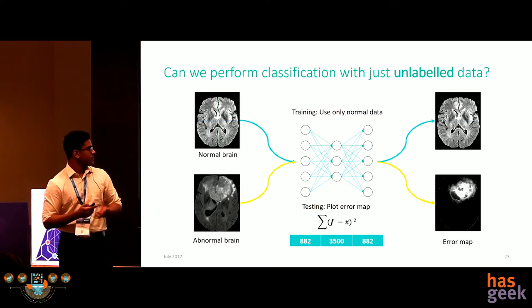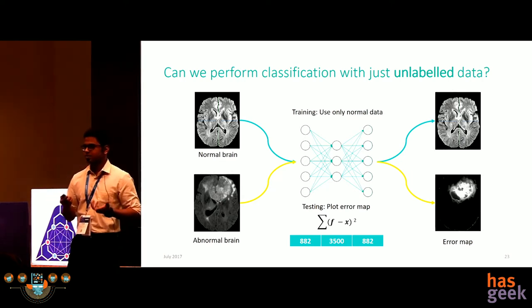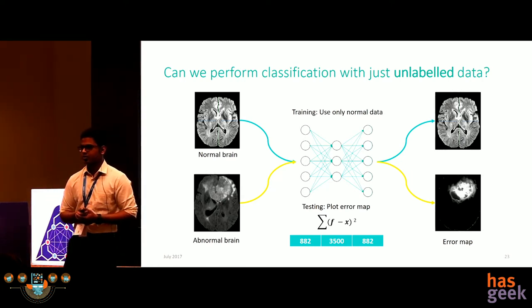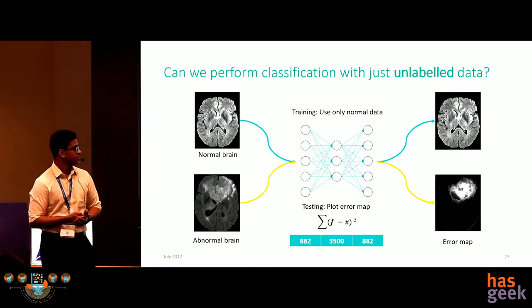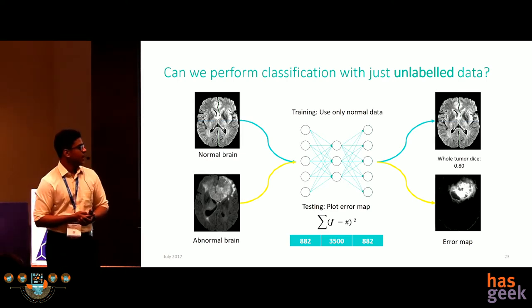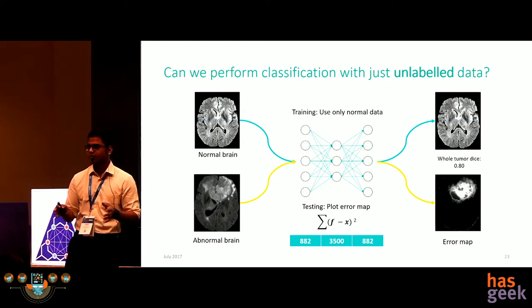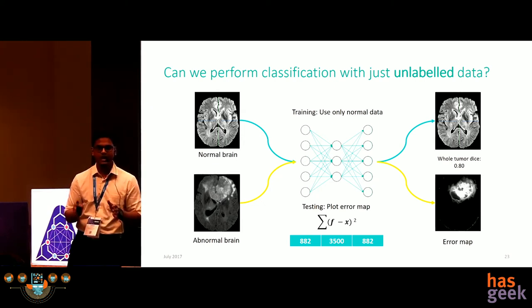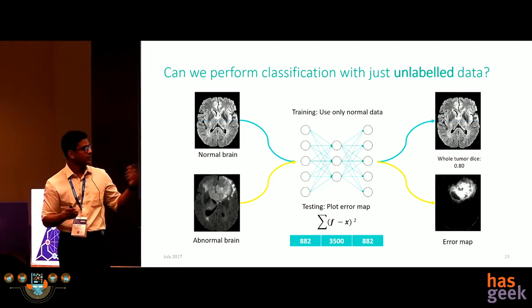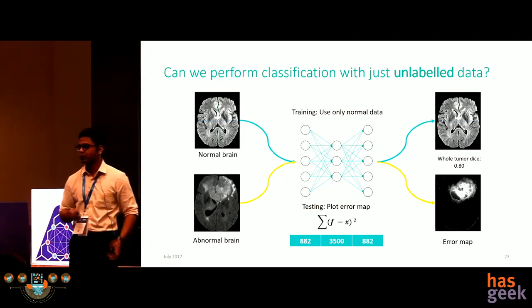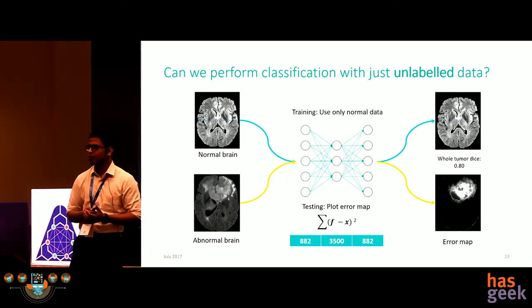The architecture we chose is a simple three-layer autoencoder. We achieved a whole tumor DICE of 0.8 with just unlabeled data — no labeling at all. We achieved an accuracy of 0.8 when binarizing the reconstruction error map to create a segmentation map.